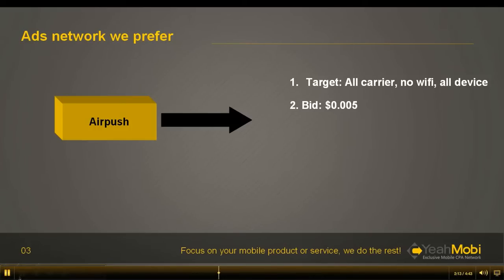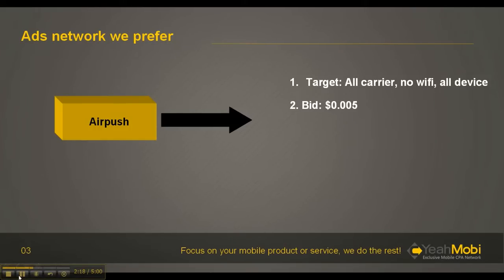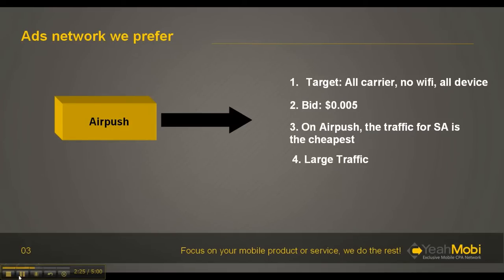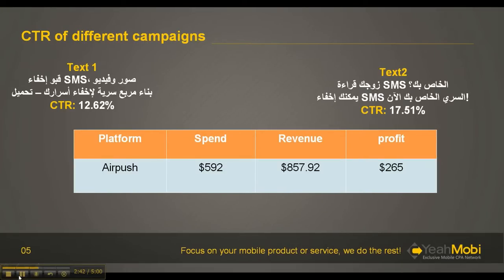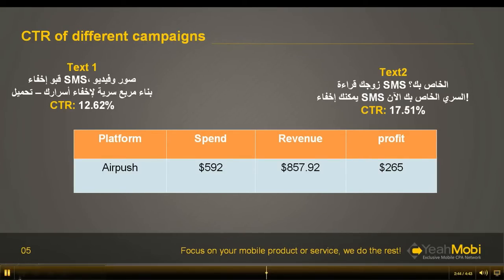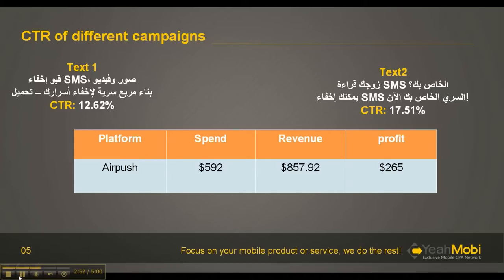Why should we choose App Push to test? We choose App Push because the traffic for Saudi Arabia is the cheapest on App Push, and it has large traffic. Our media buyer created two tests, and you can see that all the CTRs are higher. In total, we spent $592 USD and got $265 USD back.